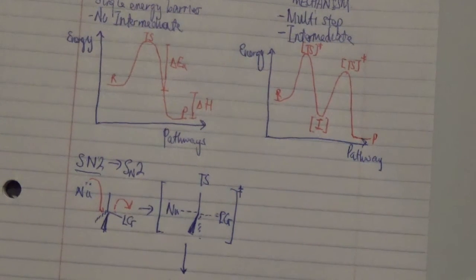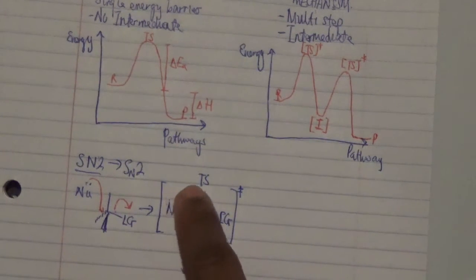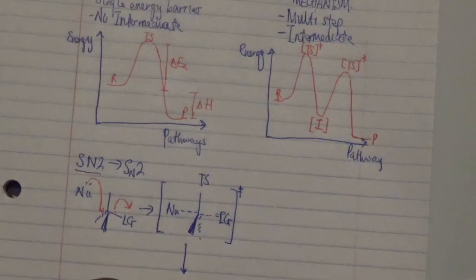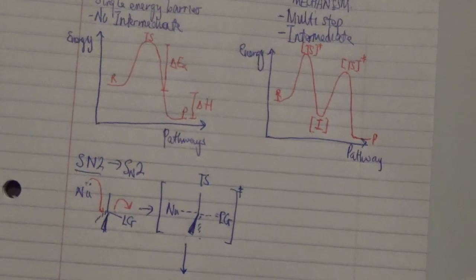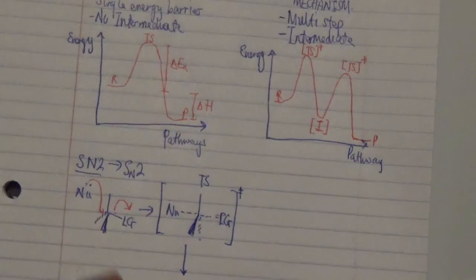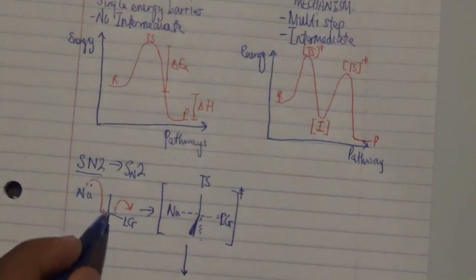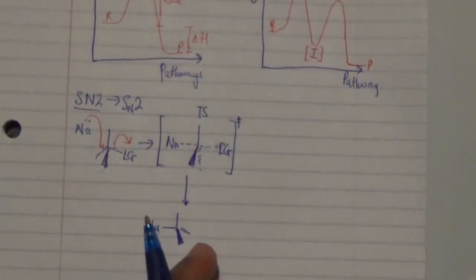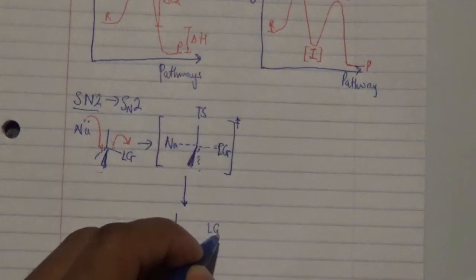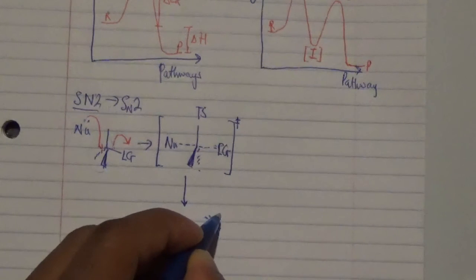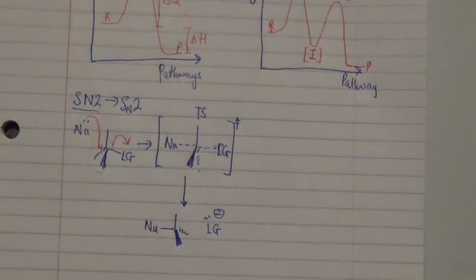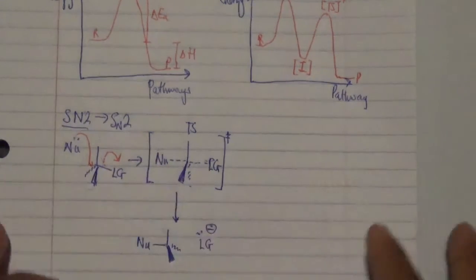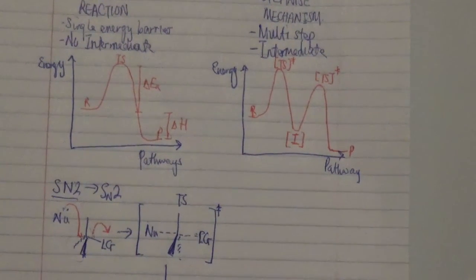We then arrive at the final product, where there is a change in the stereocenter. The nucleophile forms a bond with the former reagent, and there is a change in stereochemical specificity. The groups shift from the left side to the right side, and the leaving group is released with a negative charge. So an SN2 reaction is a concerted reaction.